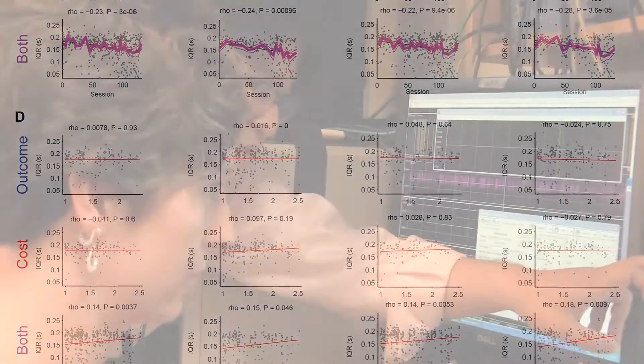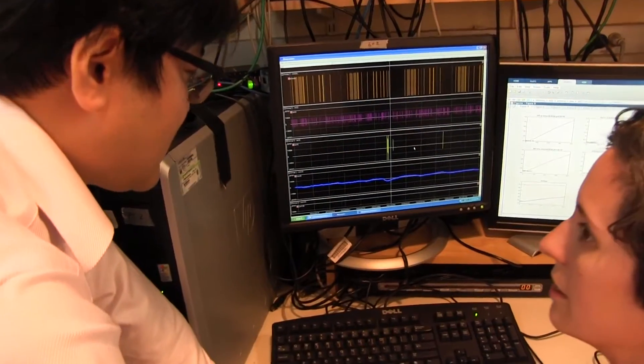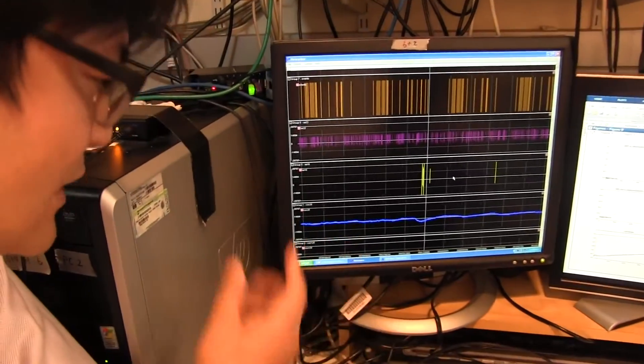When we modeled the activity we said what other variables can explain the activity that's happening in these neurons at the end of the trial. We found that there is a representation of cost as I mentioned but also a representation of reward.